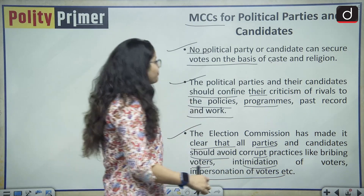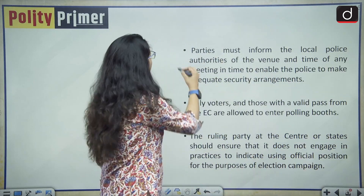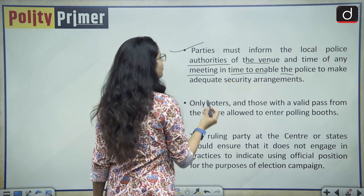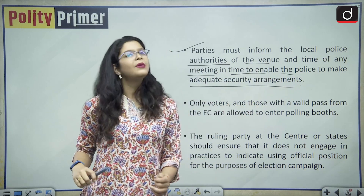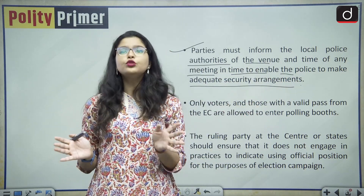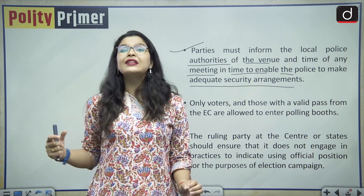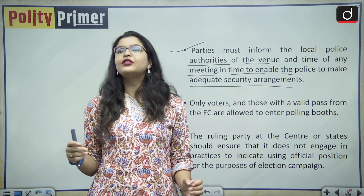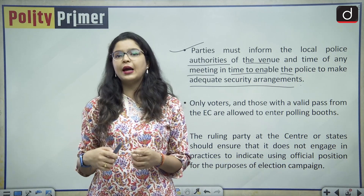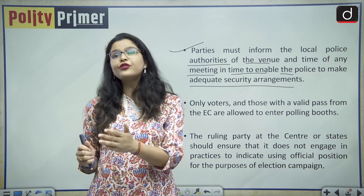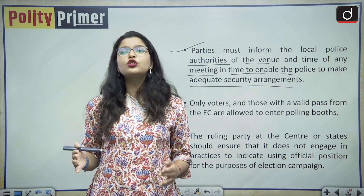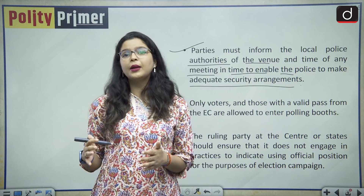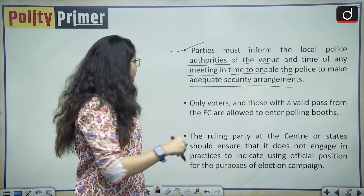Parties must inform local police authorities of the venue and time of any meeting in time to enable police to make adequate security arrangements. Sadly, this is also not followed. Whenever there is an election rally with a star campaigner, we often hear of security lapses, instances of stampedes, and uncontrollable crowds where police cannot make arrangements in due time for conducting such large election rallies.